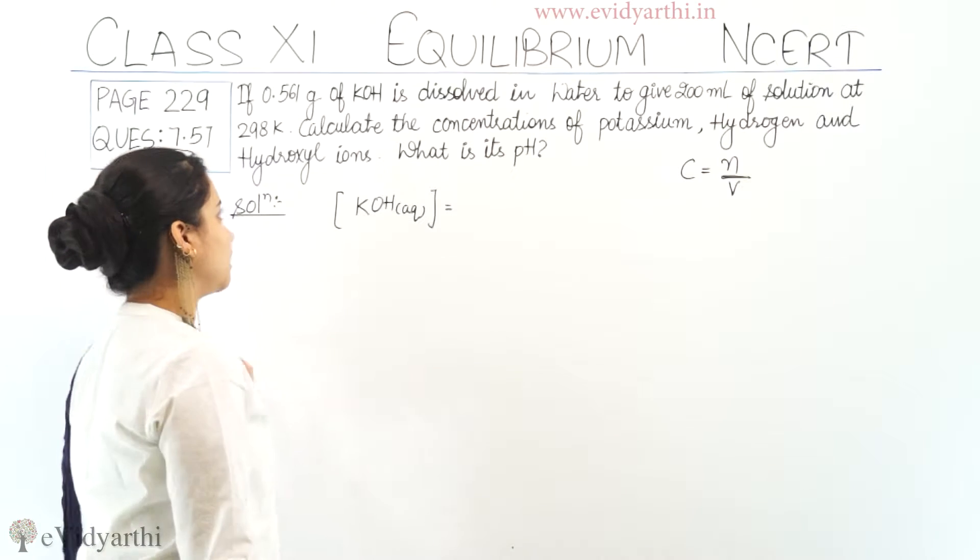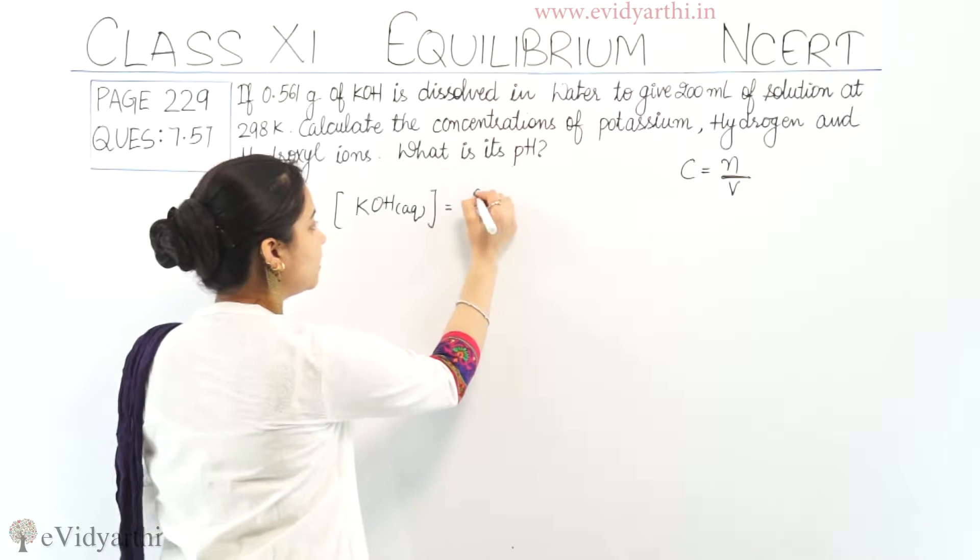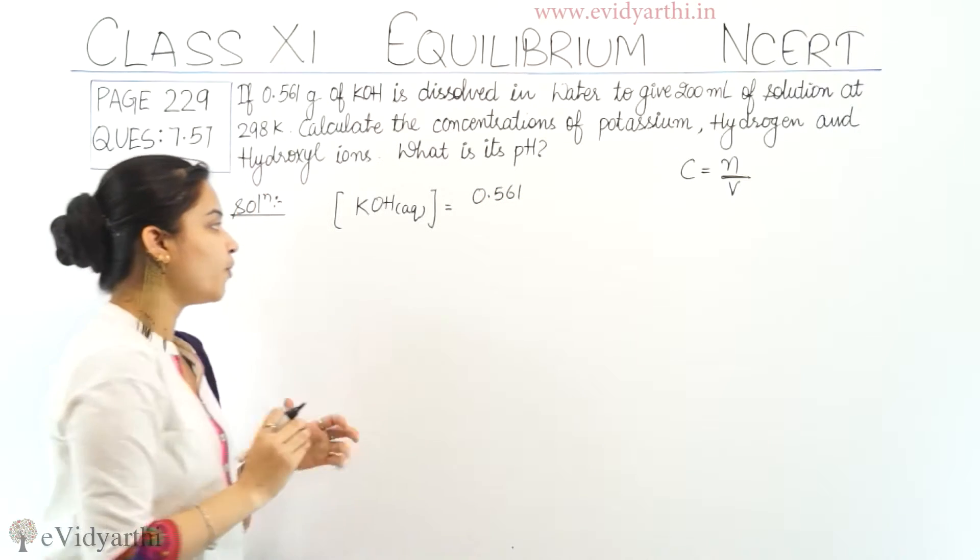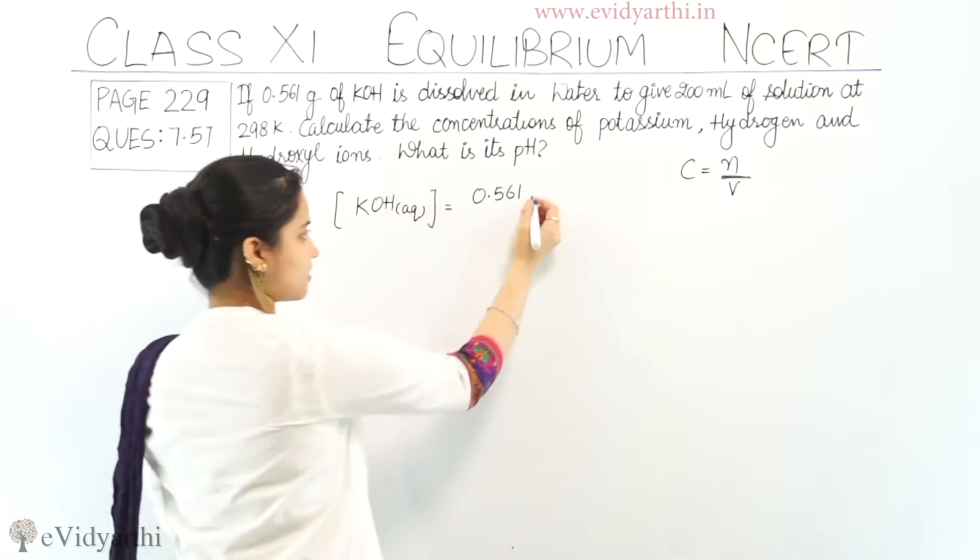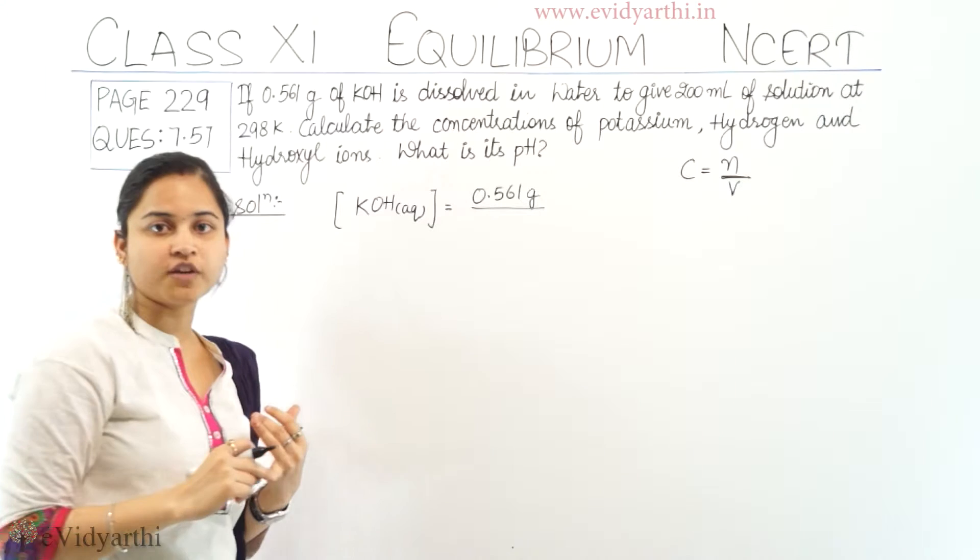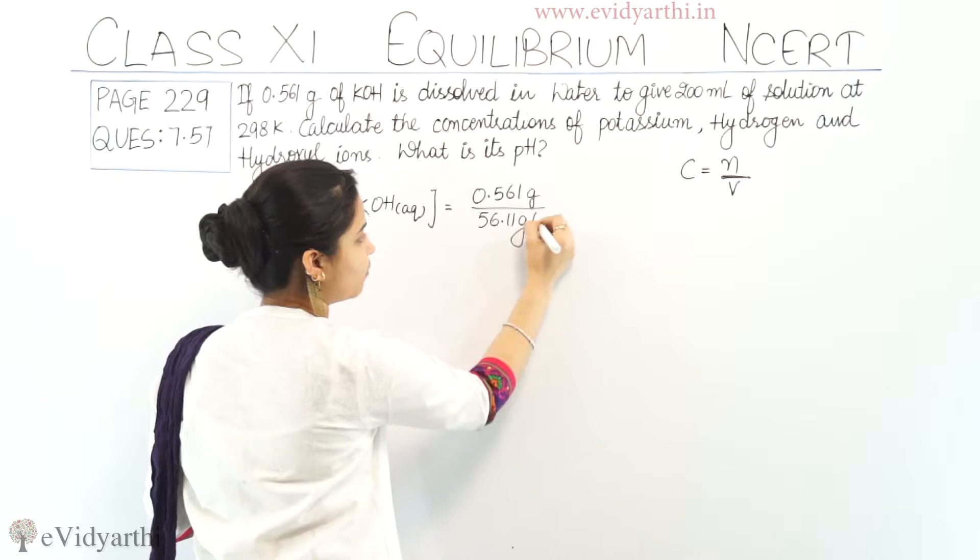Number of moles pehle nikaal hoi ki hai. Number of moles of KOH kya hoongi? It would be the given mass which is 0.561. What is the molecular mass of KOH? Molecular mass of KOH is equals to 56.111 gram per mole.